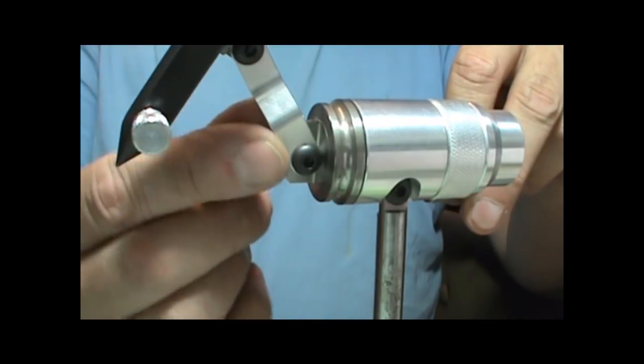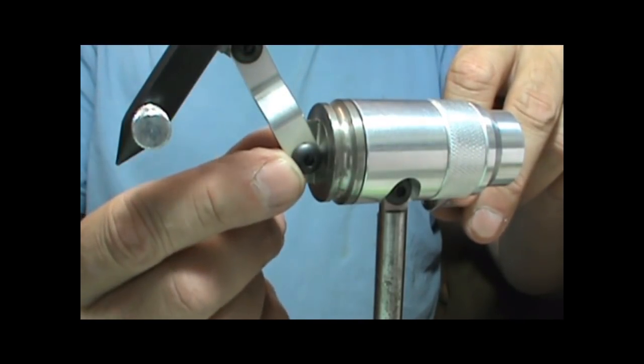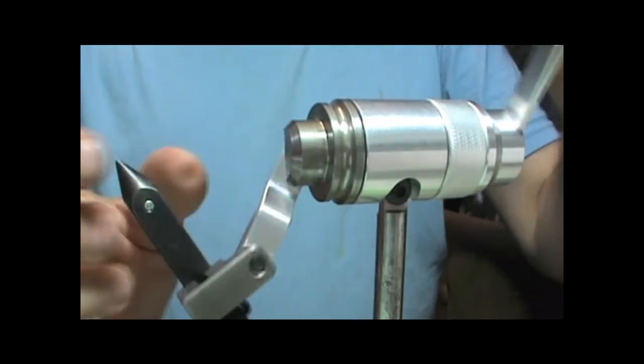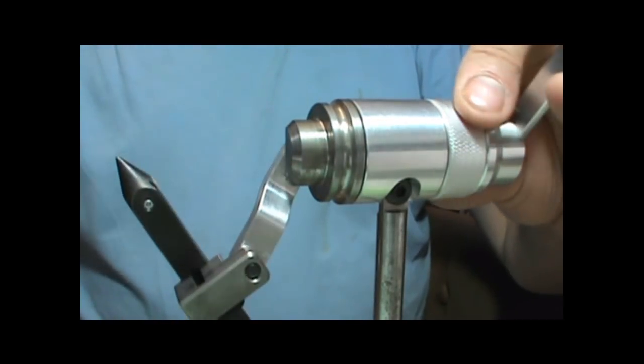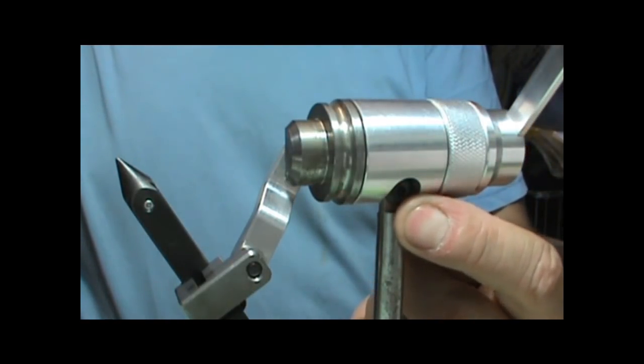Then you would loosen these Allen key screws and set it up for your left hand tying. You can see here there is another Allen screw to use when you assemble.